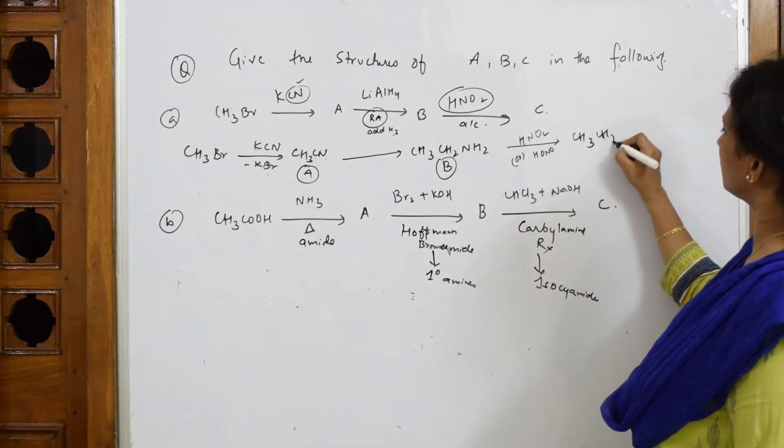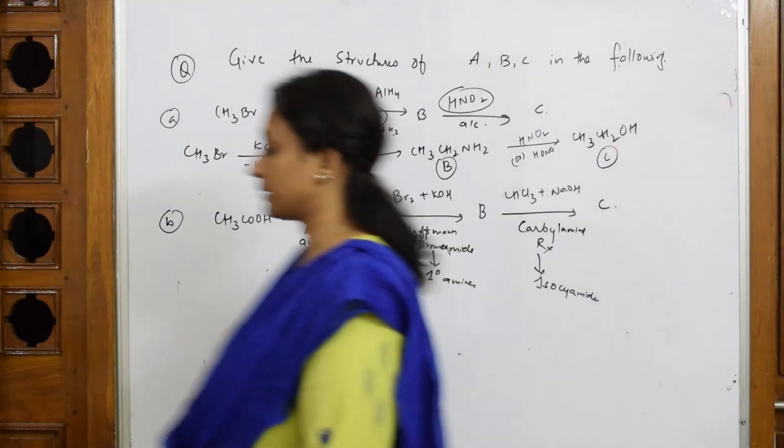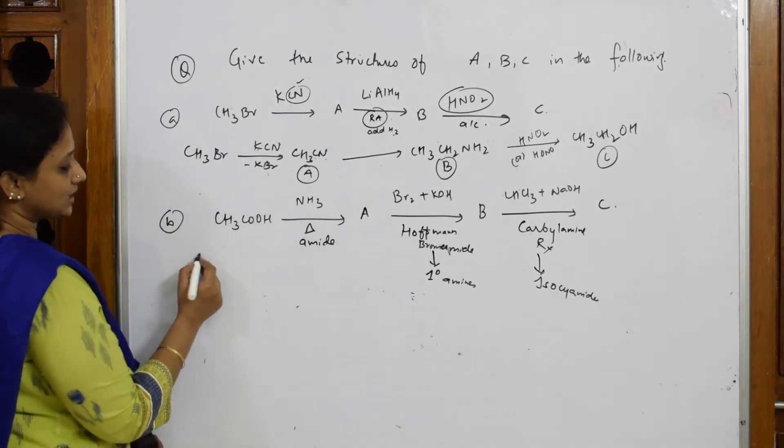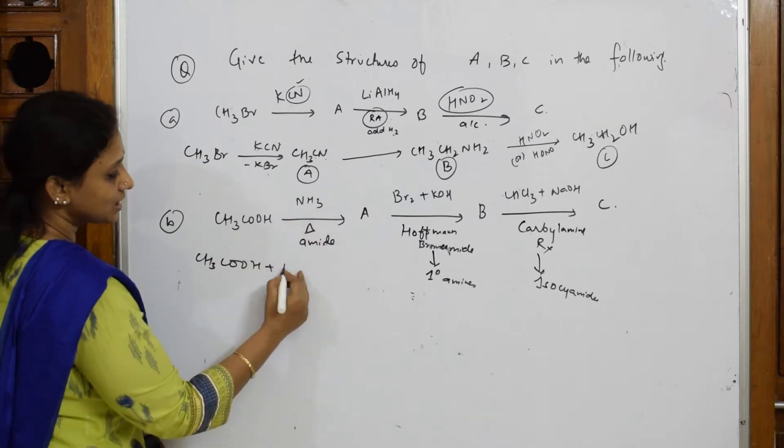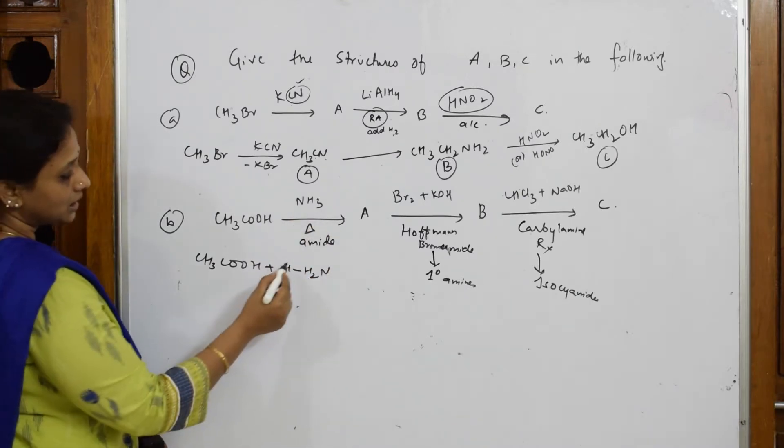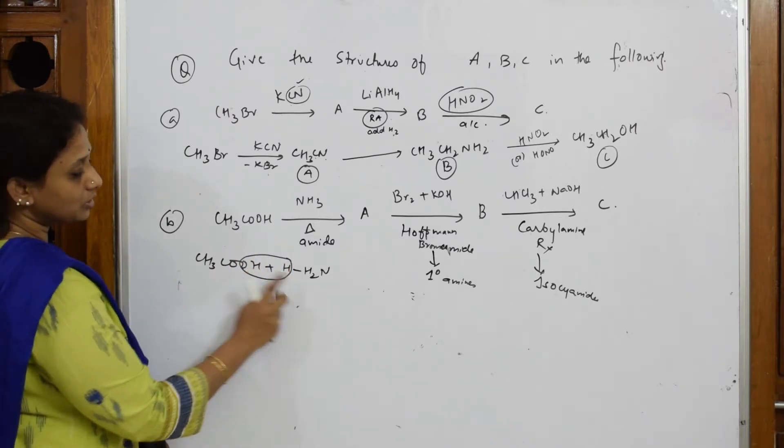Let us come back. Now acetic acid with ammonia. How is this reaction? I'll write the reaction first. This is ammonia, NH3. Let me write as NH2H and take out this water molecule from here.